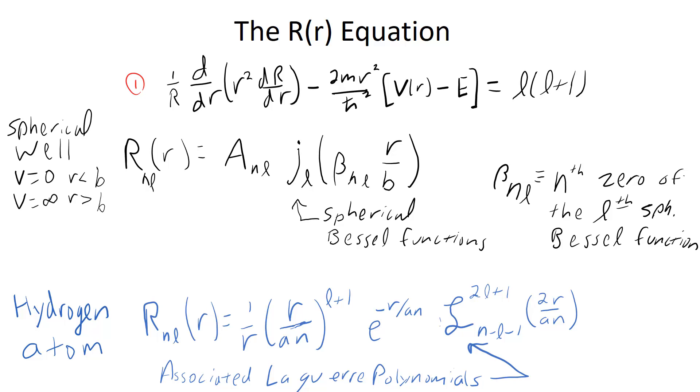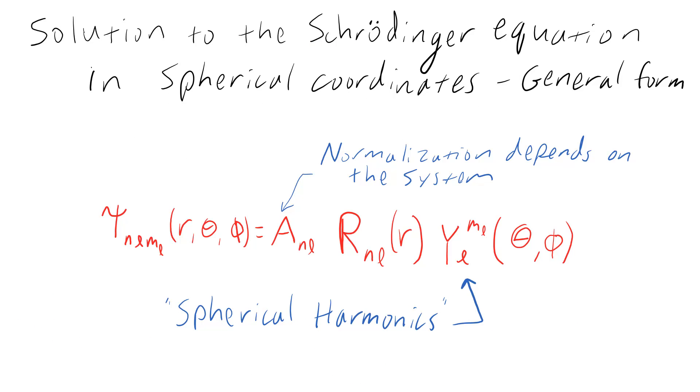With the theta, phi, and r solutions, we can put them all together and have a general solution to the Schrödinger equation in spherical coordinates. I'll write it as a normalization which depends on the system, the r solution. And Y is just the product of the theta solution and the phi solution. So capital theta times capital phi is Y. It's called spherical harmonics. It's a solution to the Schrödinger equation on a sphere given radius.